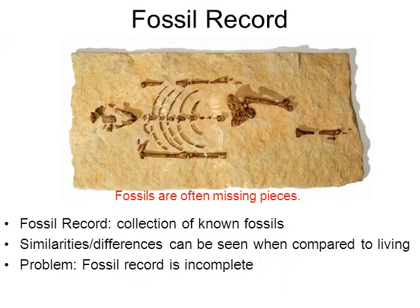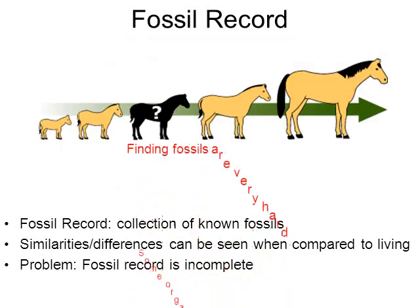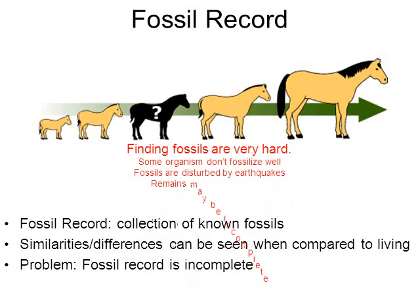There is a problem when it comes to the fossil record — the fossil record is often incomplete. Here's a picture of the fossil called Lucy, a very famous, well-known early human ancestor fossil. You'll notice many bones are missing; it's very rare to discover a full, complete skeleton. Also, it's just hard to find fossils. Some organisms don't fossilize well — soft body parts don't leave fossils, so it's hard to find fossils of something like a jellyfish.